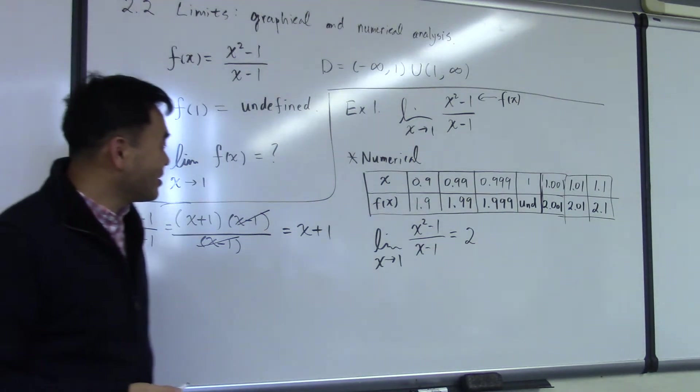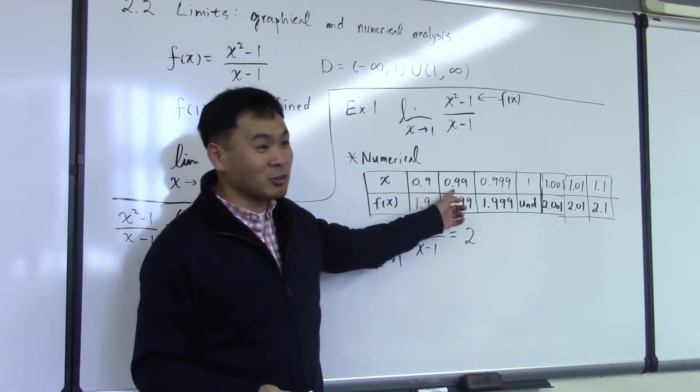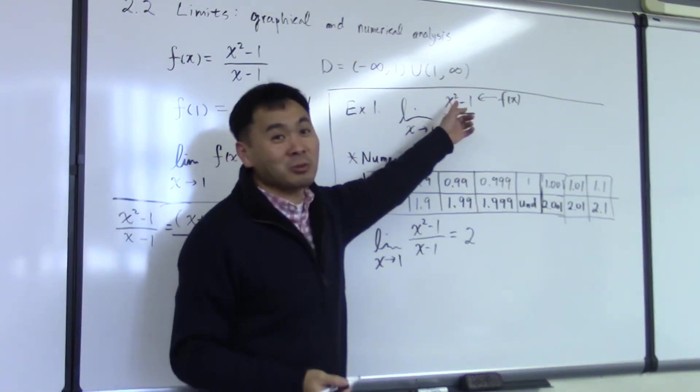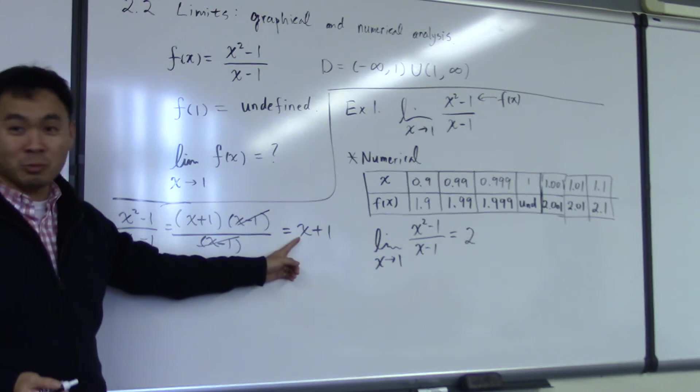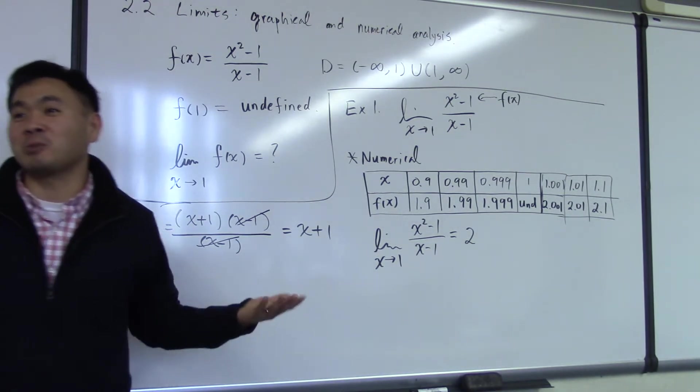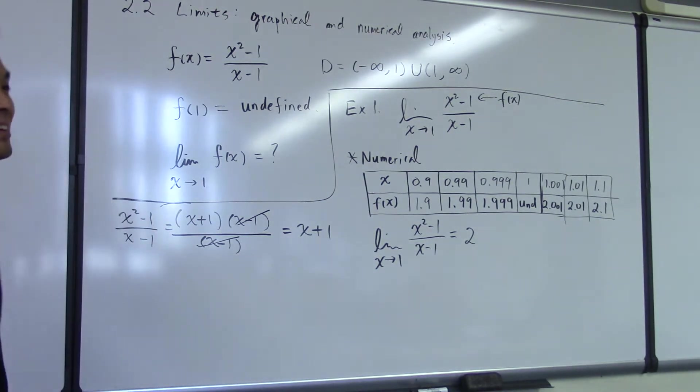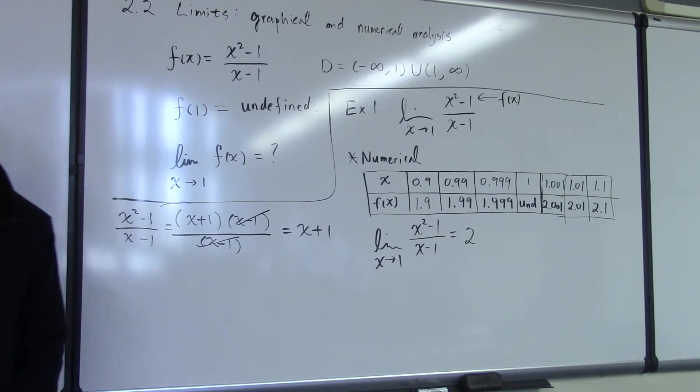So actually, when I was plugging in 0.99, in my head I wasn't really doing 0.99 squared. All I was doing was 0.99 plus 1, and it was that 1.99. Easy, right? So that was the trick. If you want to impress your friends.